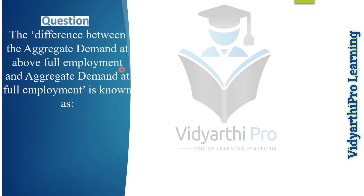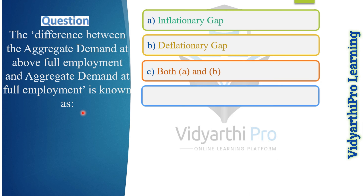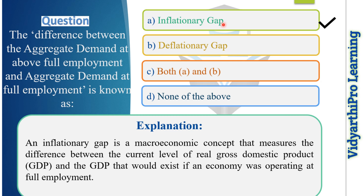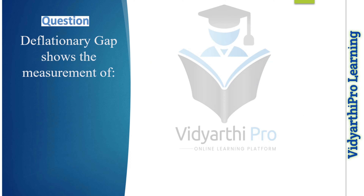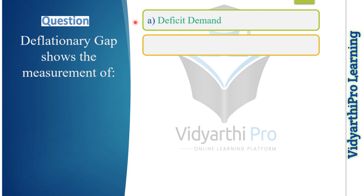Our next question: the difference between the aggregate demand at above full employment and aggregate demand at full employment is known as what? Option one: inflationary gap. Option two: deflationary gap. Option three: both A and B. Option four: none of the above. The correct answer is option A, inflationary gap, because an inflationary gap is a macroeconomic concept that measures the difference between the current level of real GDP and the GDP that would exist if an economy were operating at full employment.